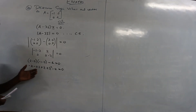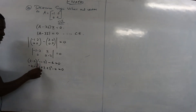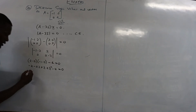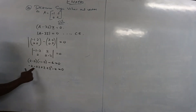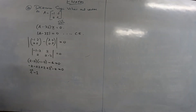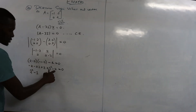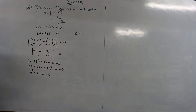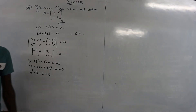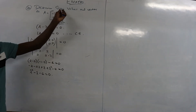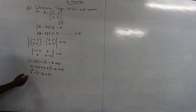The expansion gives us lambda squared, then collecting lambda terms: negative two lambda plus lambda gives negative lambda. Then the constants: negative two minus four gives negative six. So our characteristic equation is: lambda squared minus lambda minus six equals zero. Remember, the values of lambda we find will be our eigenvalues.